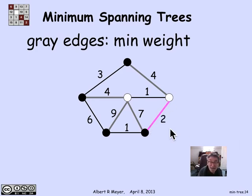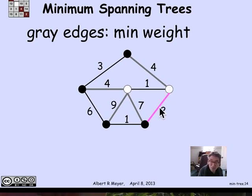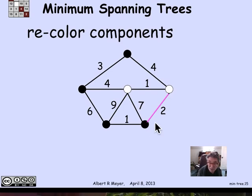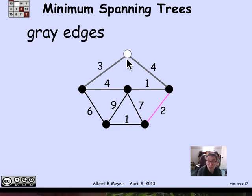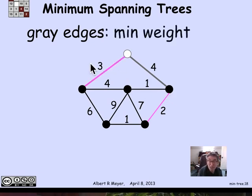Once I've committed to that magenta edge, I now have a graph with five components: the component defined by that edge with two vertices, and four other isolated vertices. I recolor so that both vertices in this component are black, and color the other four arbitrarily. With only one white vertex now, there are only two gray edges. The minimum weight among them is 3, so that becomes my next edge in the minimum weight spanning tree.